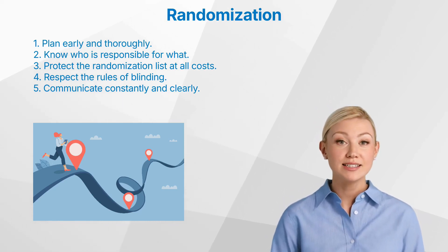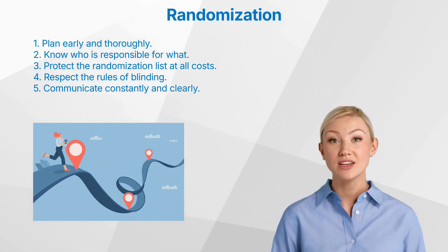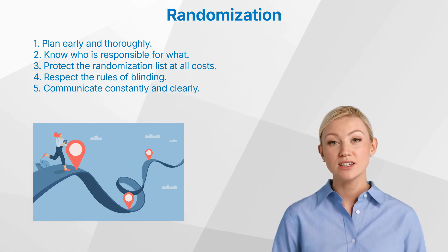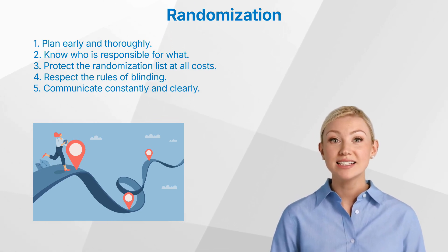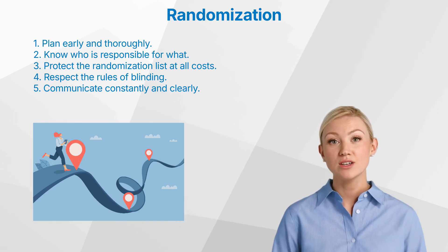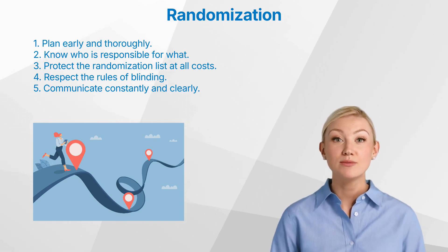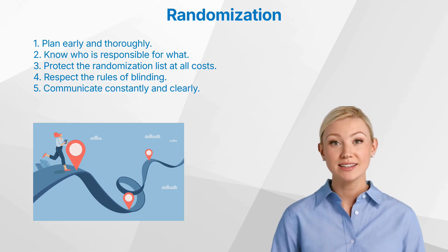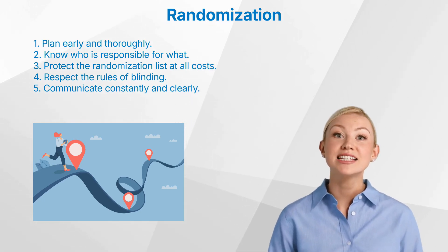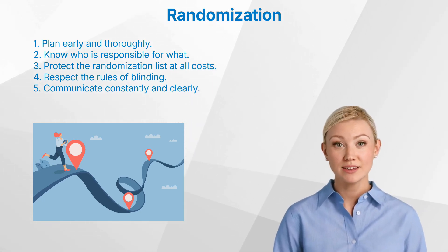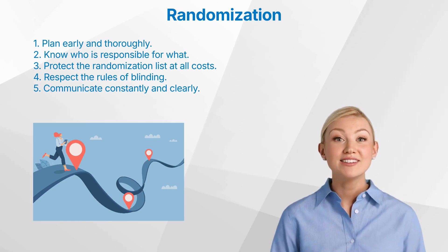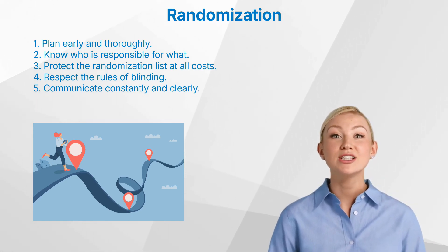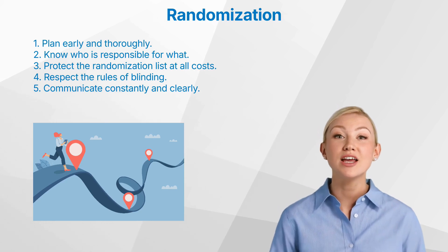The key takeaways: one, plan early and thoroughly; two, know who is responsible for what; three, protect the randomization list at all costs; four, respect the rules of blinding; five, communicate constantly and clearly. Randomization is the safeguard of clinical research integrity. When it's done right, it allows us to ask and answer research questions with confidence, and ensures that our conclusions are built on a solid, unbiased foundation.